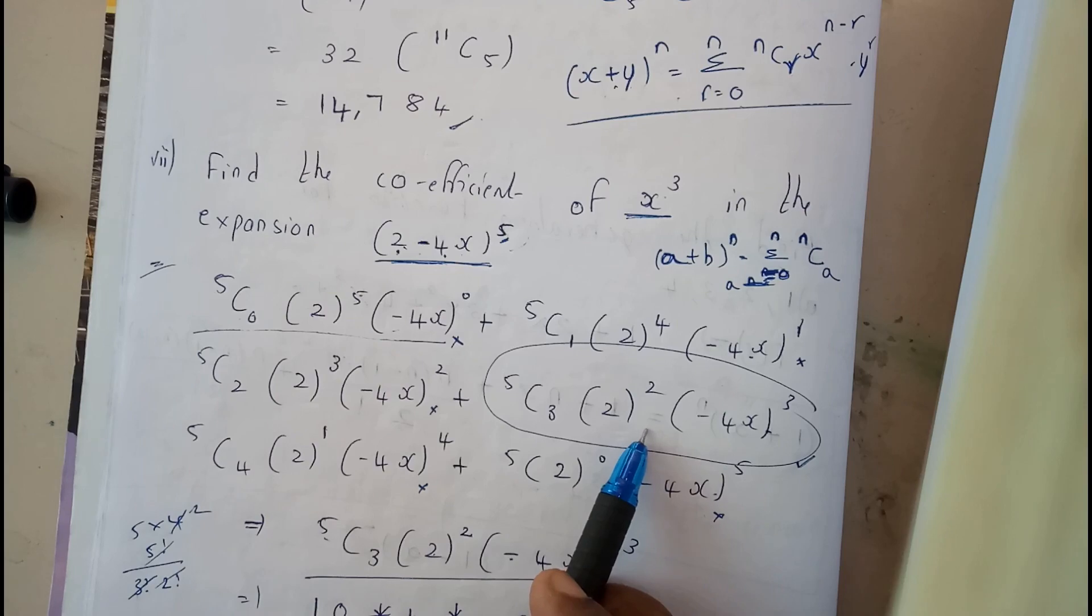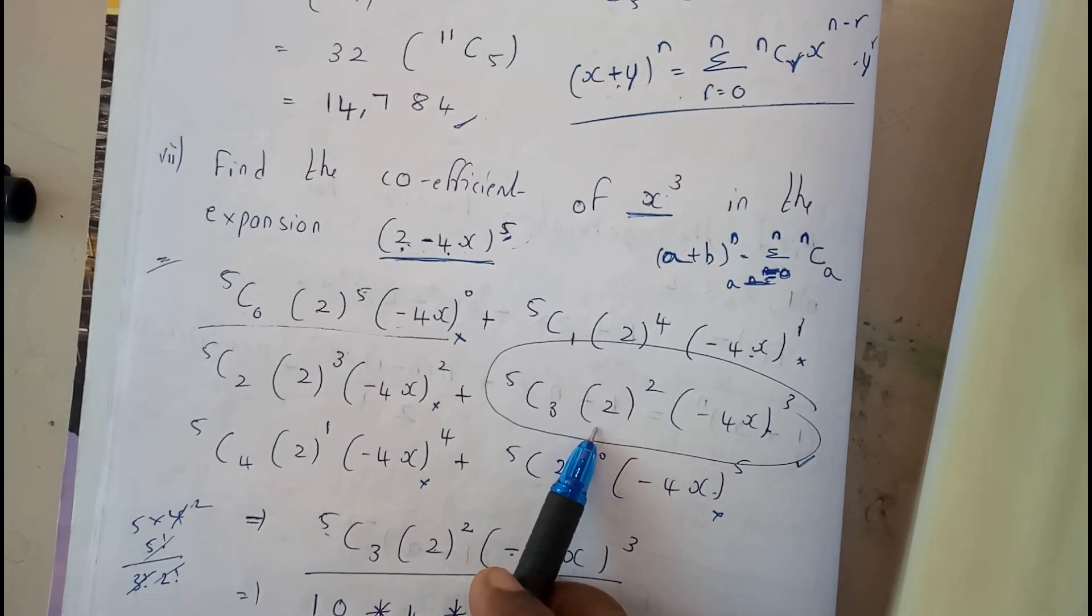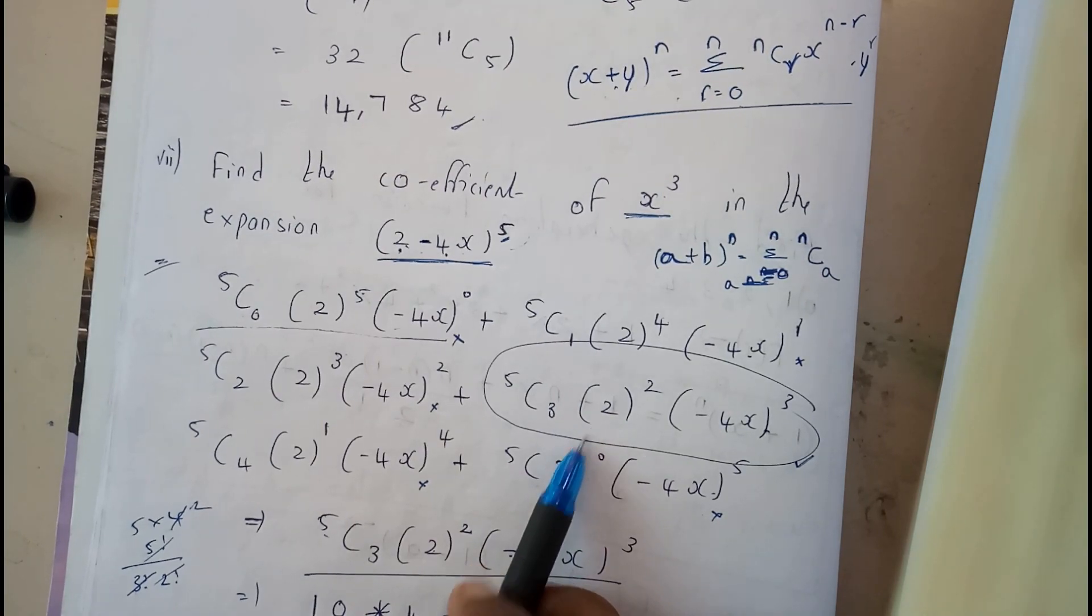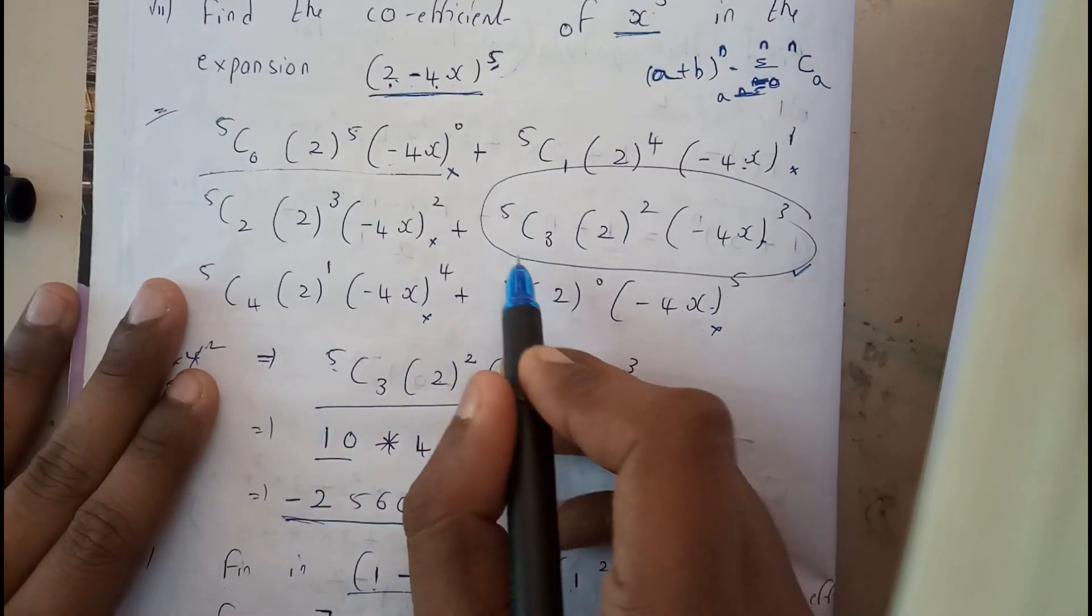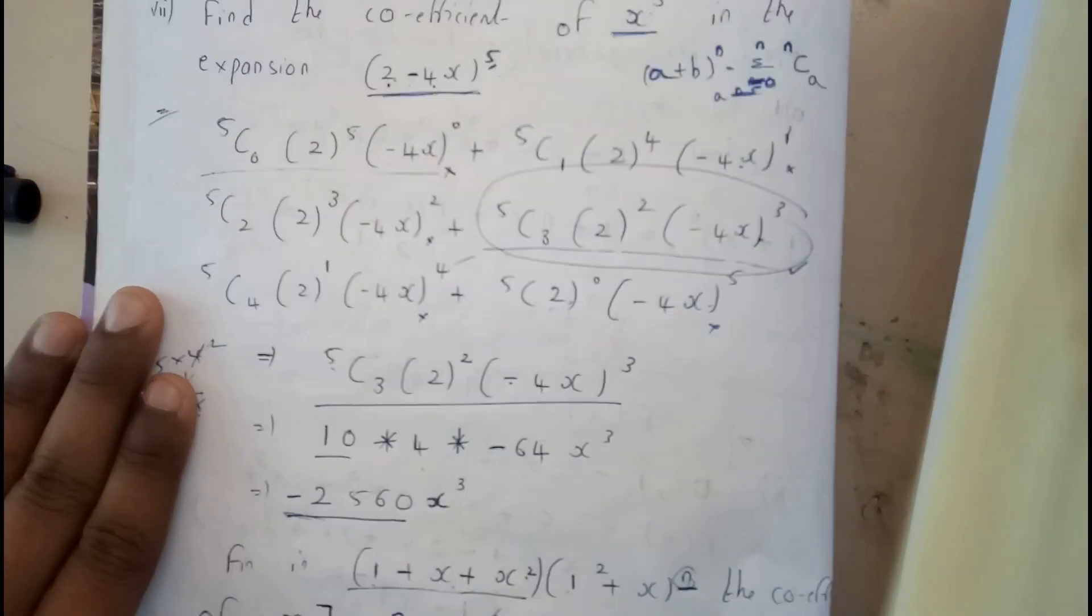So, I got only single term. If you got two terms, you will be taking common and you will be adding the coefficients. I hope everyone got a small idea. So, I will be calculating only this part.